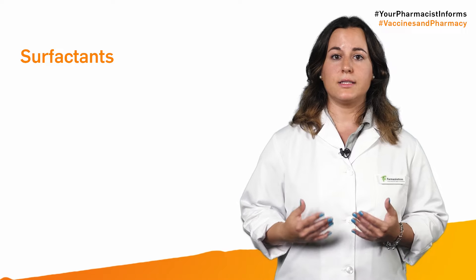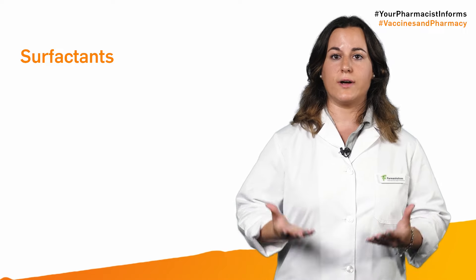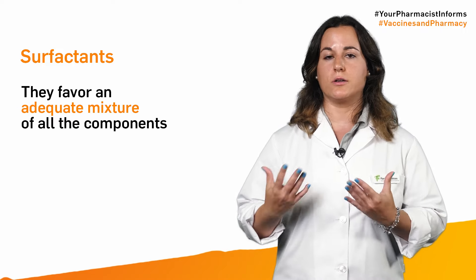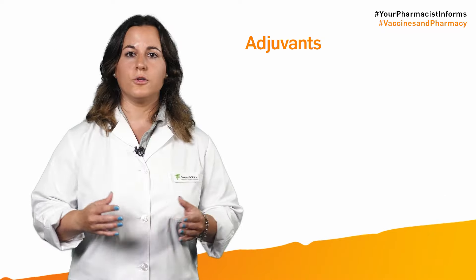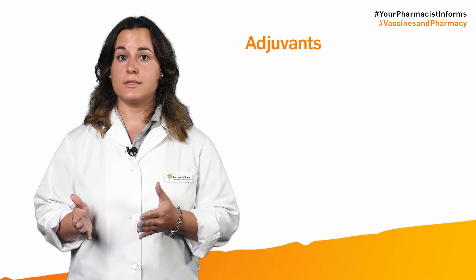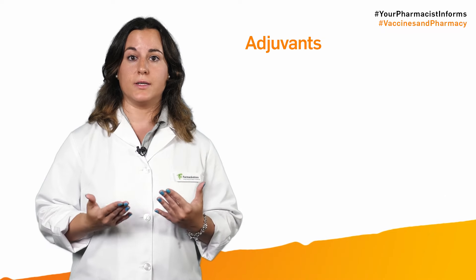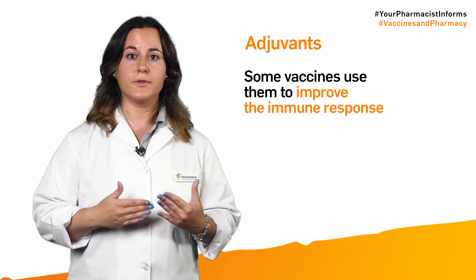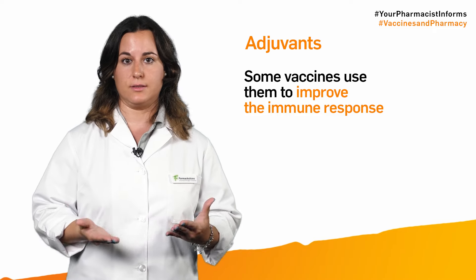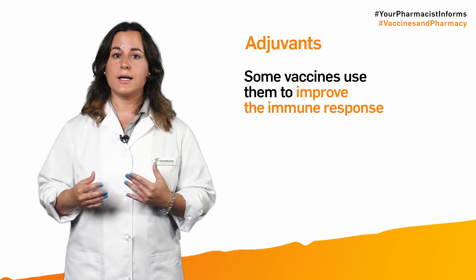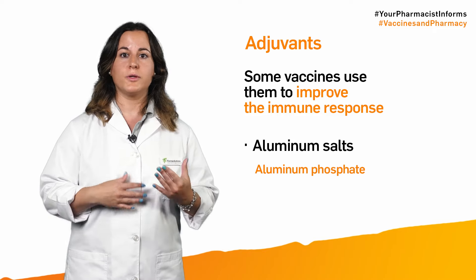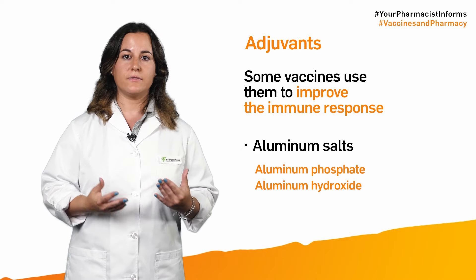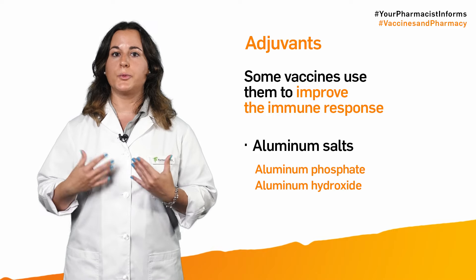In vaccines, it is also possible to find surfactants, which favor an adequate mixture of all the components. And although not in all vaccines, some vaccines use adjuvants, which are substances that contribute to improving the immune response produced by the vaccine. The most used are some aluminum salts, such as aluminum phosphate or aluminum hydroxide, whose safety has been widely proven.